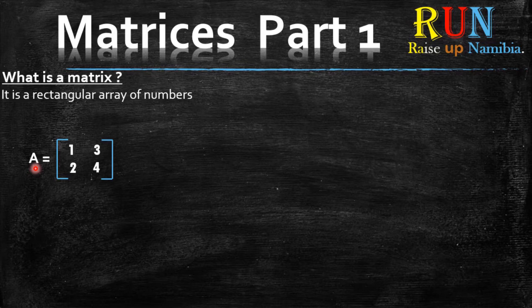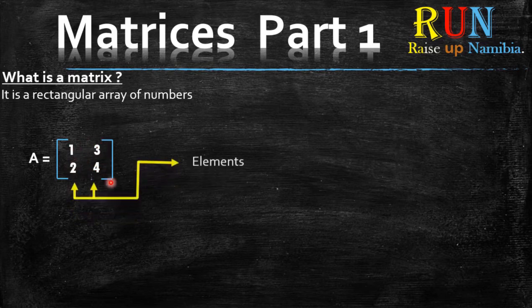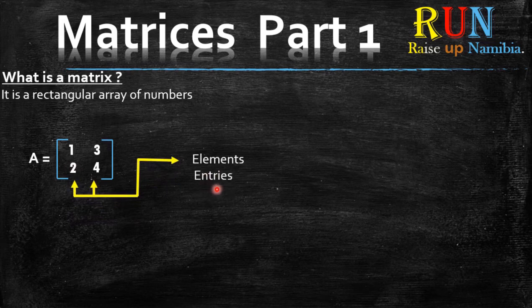Now inside a matrix we have, for example, this one: one, three, two, four. Now these numbers are what we call elements or entries. Now they are not always numbers — they can be letters or sometimes even expressions, which we will be looking at at a later stage.